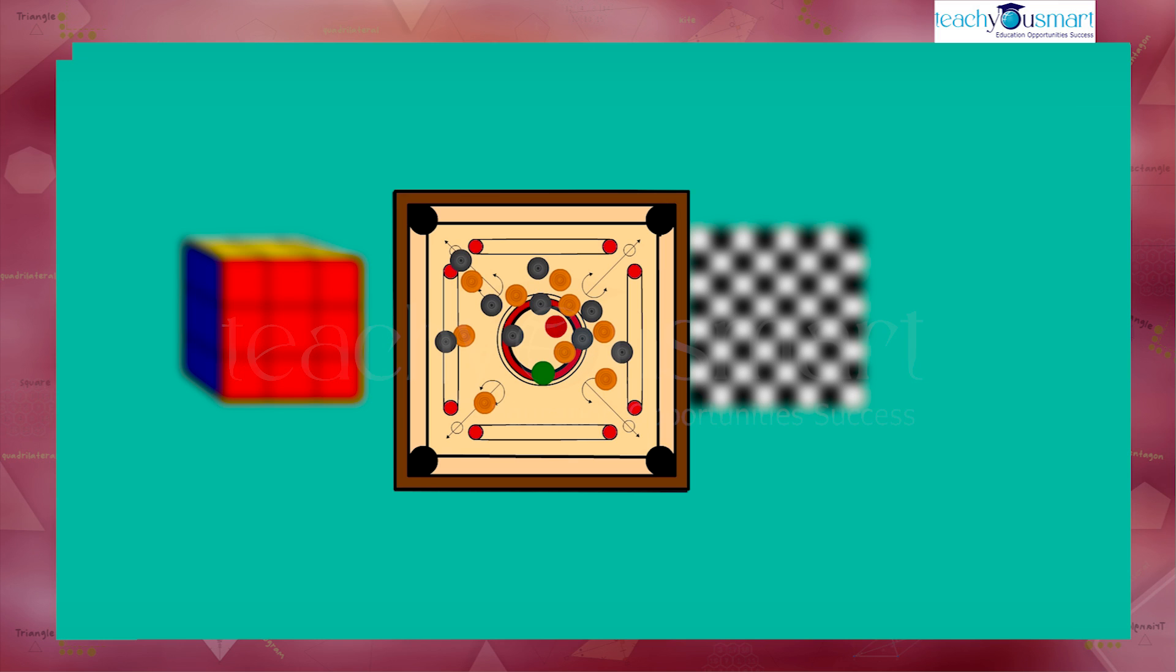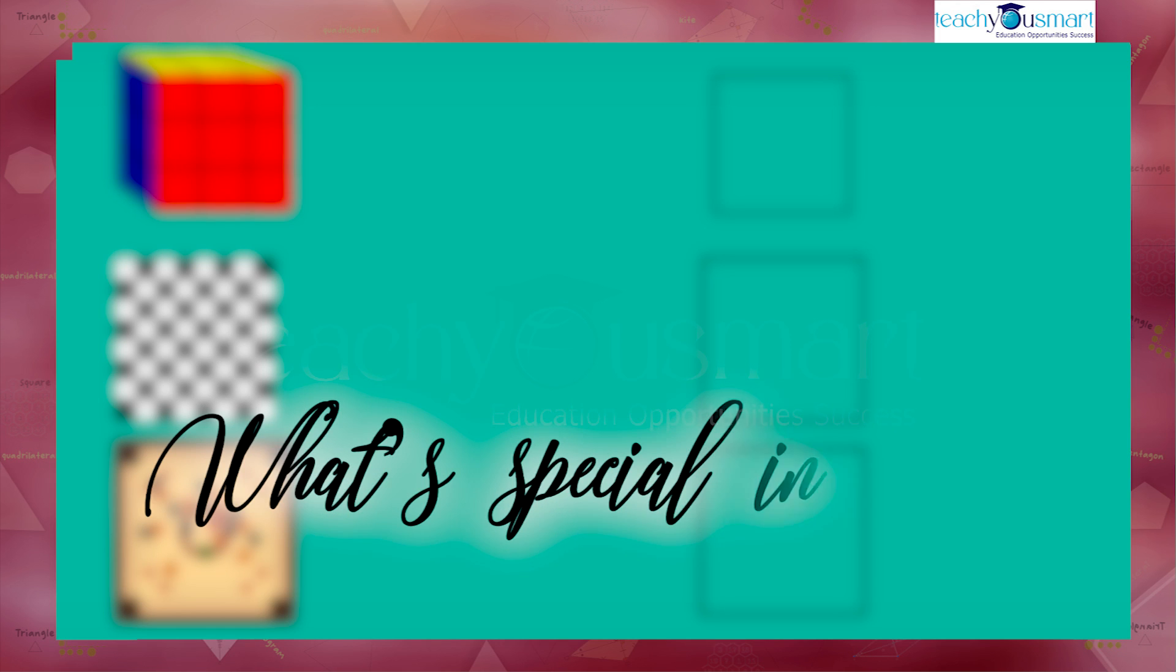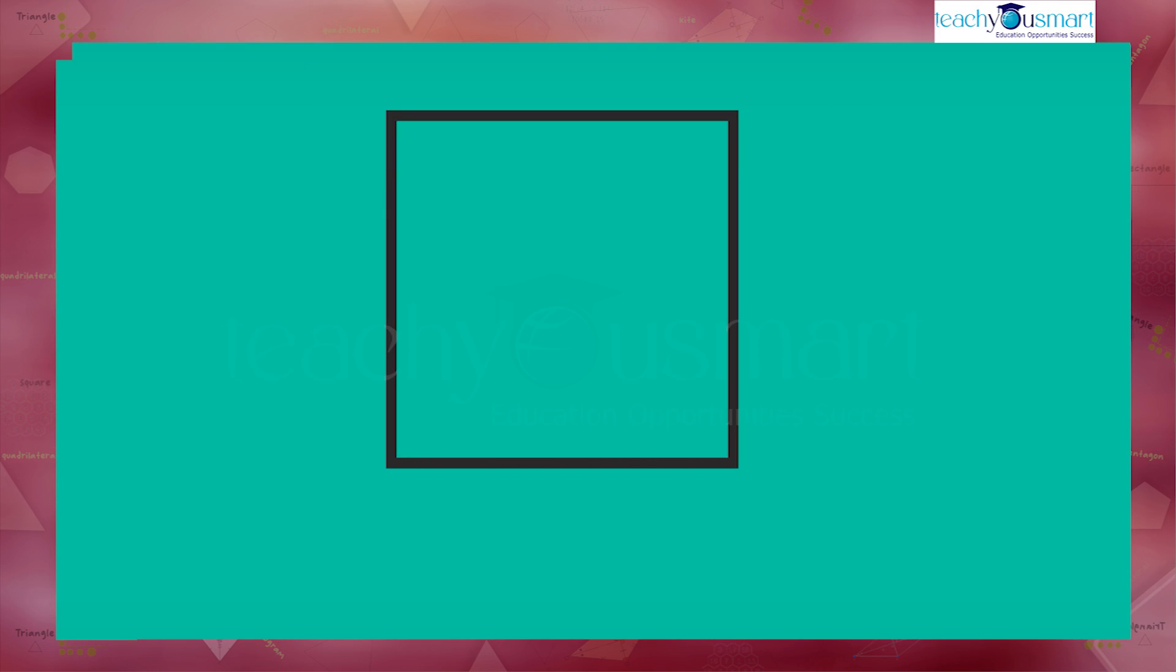Can you see a quadrilateral here? Yes, we can. In all these figures we can see rectangles. What's special about it? Let's check. Yes, all sides are equal.